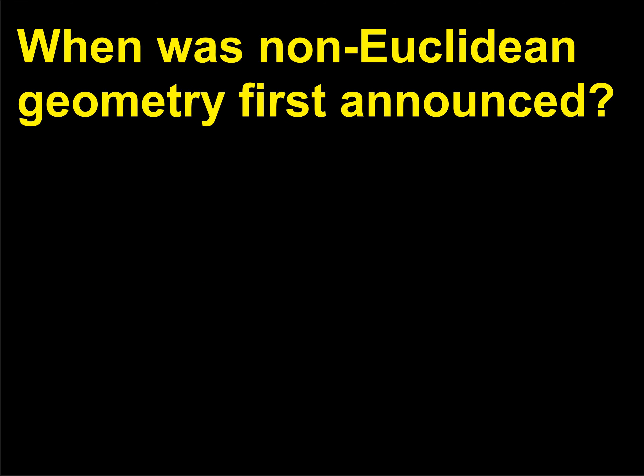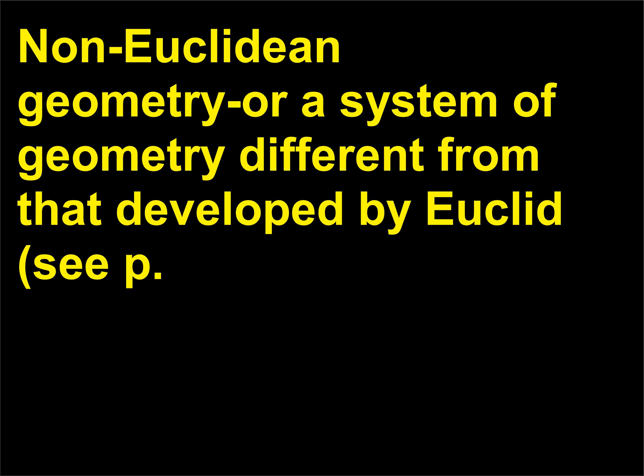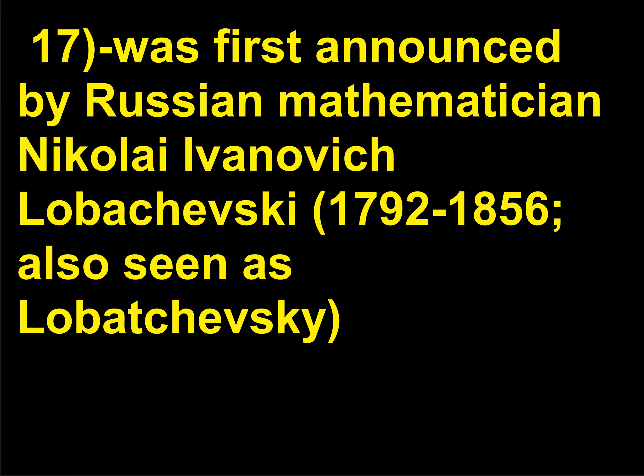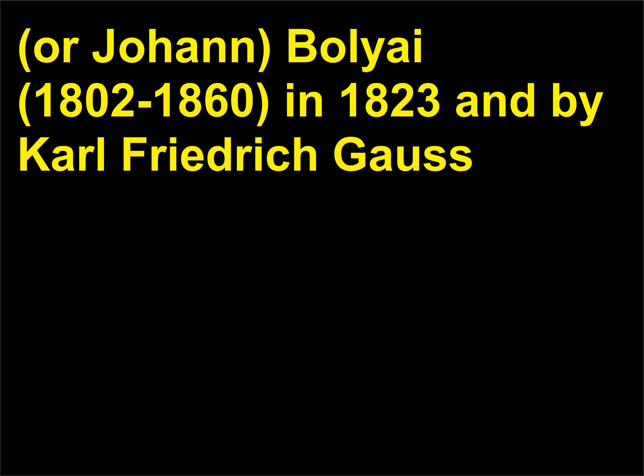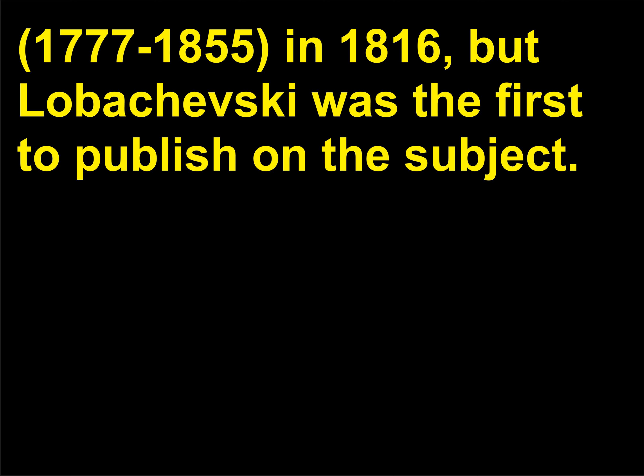When was non-Euclidean geometry first announced? Non-Euclidean geometry — a system of geometry different from that developed by Euclid — was first announced by Russian mathematician Nikolai Ivanovich Lobachevsky, 1792–1856, in 1826. This idea had already been independently developed by Hungarian János Bolyai, 1802–1860, in 1823, and by Karl Friedrich Gauss, 1777–1855, in 1816, but Lobachevsky was the first to publish on the subject.